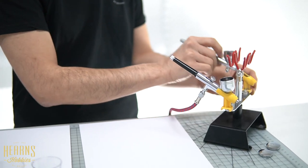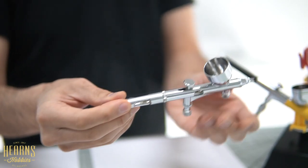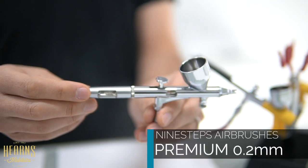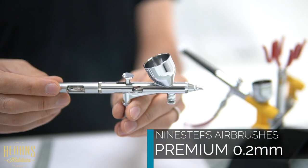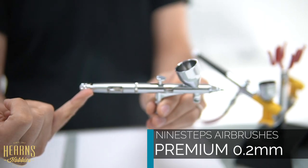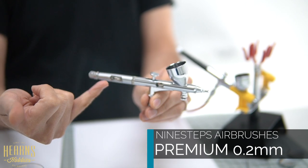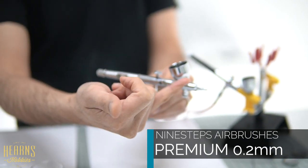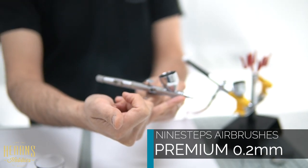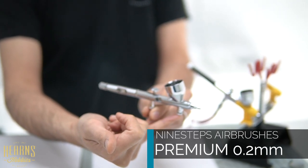Over here we've got the premium. So the premium is a finer airbrush, it's 0.2mm. It has a lot more metal in the construction of the airbrush. The main difference you'll see is this has got a 0.2mm nozzle so it's much finer. It also has the MAC valve.